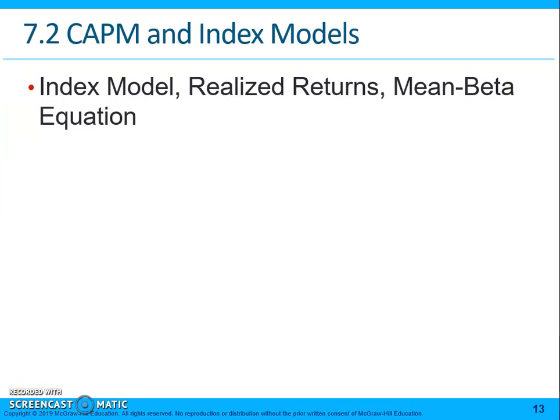We talked about the assumptions related to the CAPM and how unrealistic they are. Probably one of the most significant is that the market portfolio contains every available security, which we know is not the case because there are many securities that are not accessible to the public. So, what we do is we introduce what we call an index model. For the vast majority of these models, we use the S&P 500 as the market proxy.